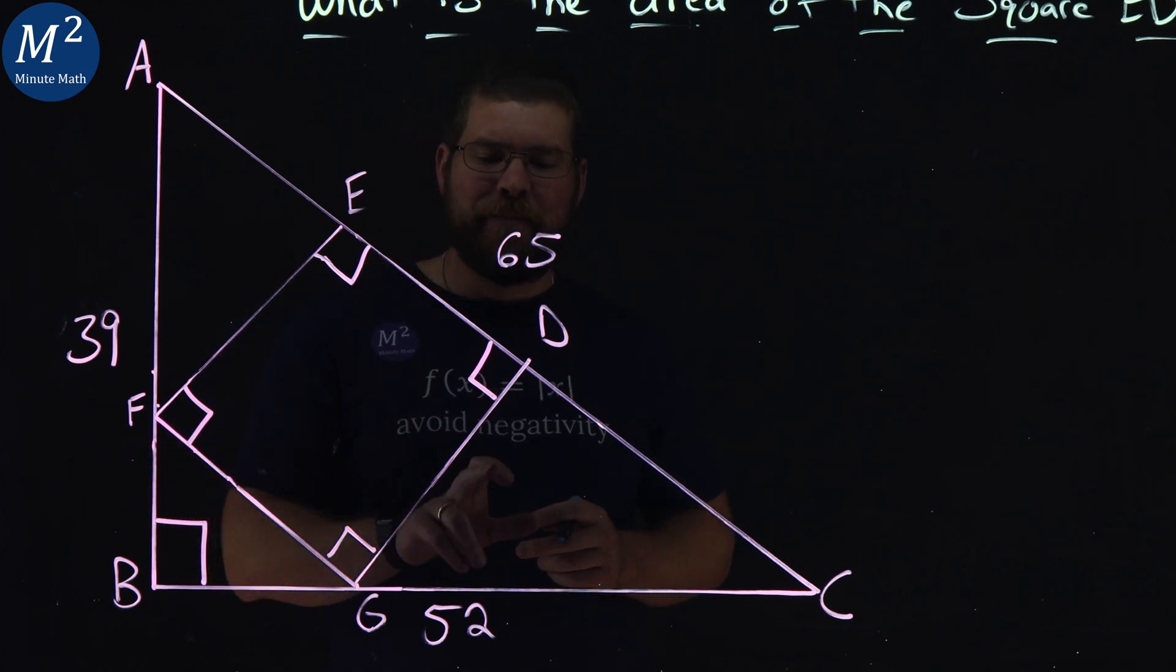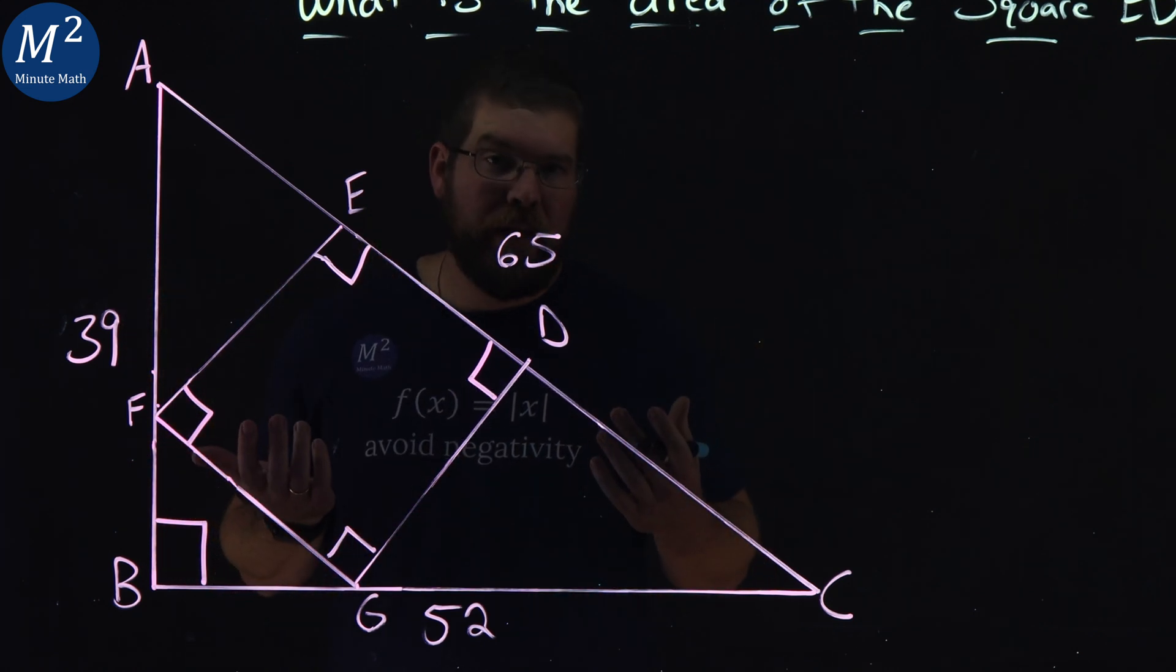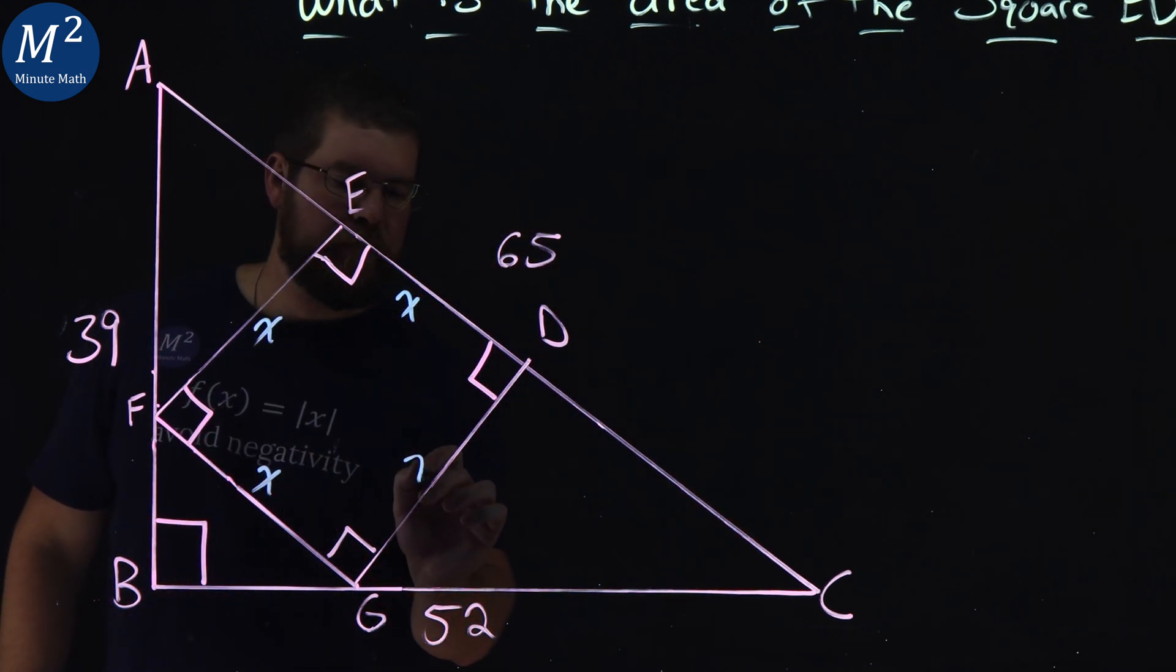Our square here, when we want to find the area of the square, we should really know what the side lengths are. We don't know what they are, but we know it's a square, so let's call them X.